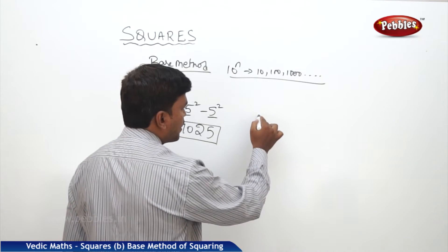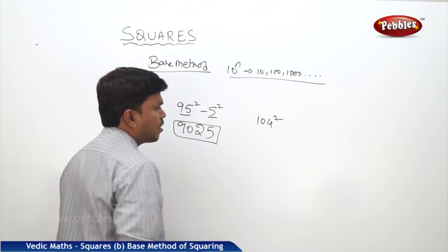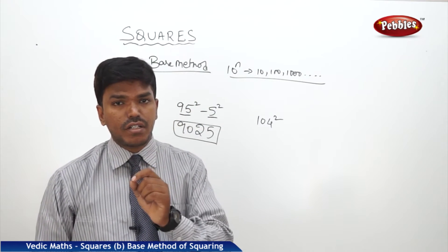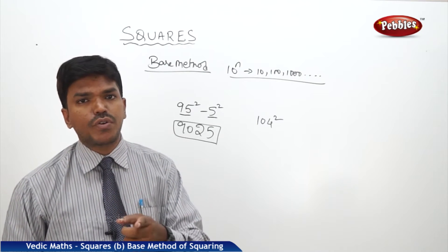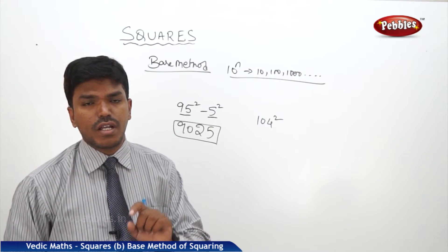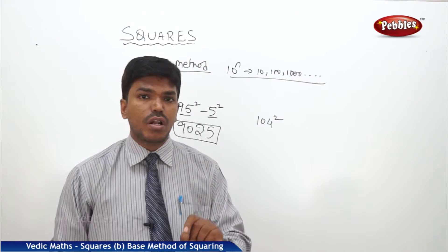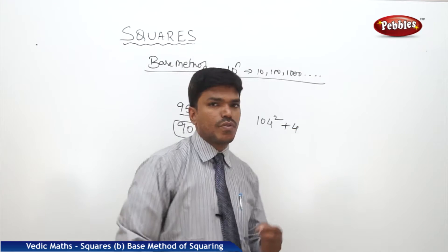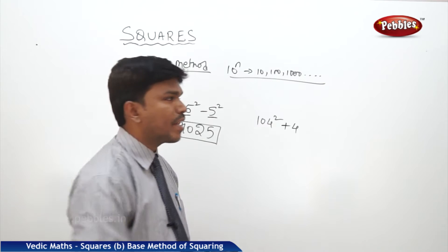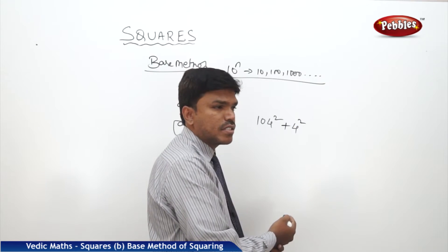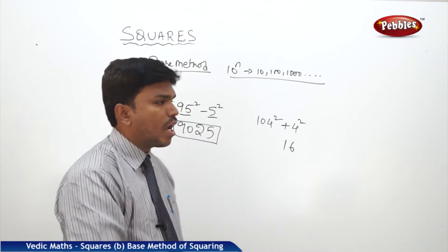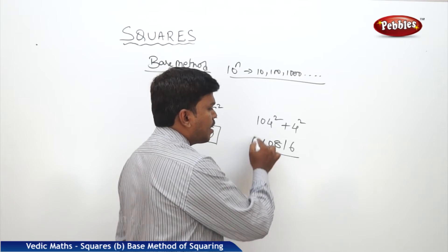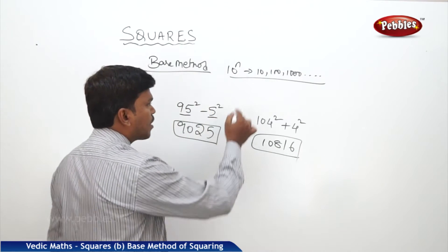One more example: I need 104 squared. This time, 104 is nearer to 100, so we take the base as 100. Compare 104 with the base — it is more, how much more? 4. So write plus 4. What is 4 squared? 16. On the right side, put 16. And 104 plus 4 is 108 on the left side.